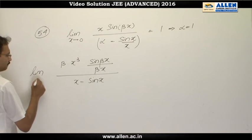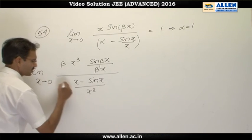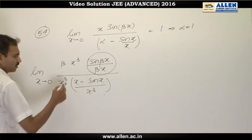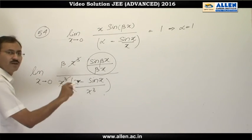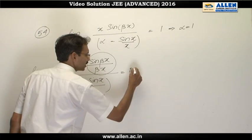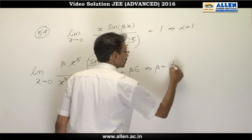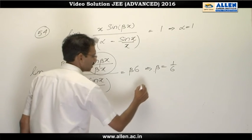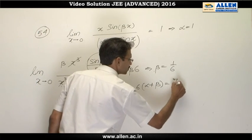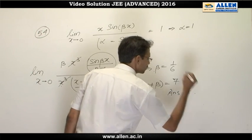Now dividing numerator and denominator by x cubed: sin(βx) over βx approaches 1, and using the Taylor expansion, x minus sin x over x cubed approaches 1/6. So the limit equals β divided by (1/6) equals 6β. Setting 6β equal to 1 gives β equals 1/6. With alpha equals 1 and β equals 1/6, the value of 6 times (alpha plus beta) equals 6 times (1 plus 1/6) equals 6 times 7/6 equals 7. So the answer is 7.